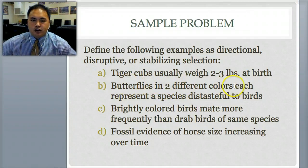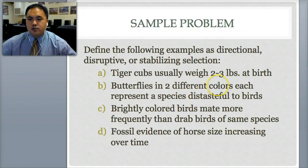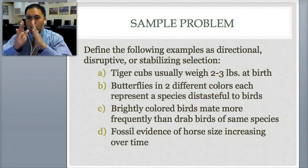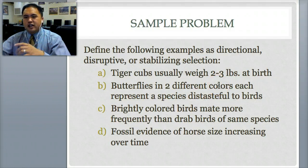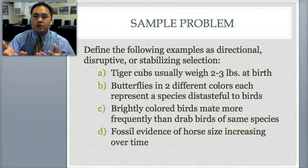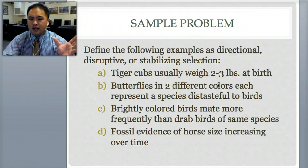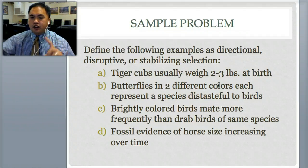Butterflies in two different colors each represent a species distasteful to birds. This one is disruptive. Notice it says two different colors — we're widening the selection. Instead of just brown mice, we're disrupting into white and black. The butterflies are two different colors, so that's disruptive — the frequency is splitting into two.